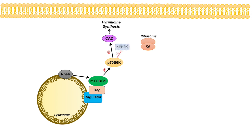Another thing P70S6K does is inhibit EEF2K, or eukaryotic elongation factor 2 kinase. EEF2K normally inhibits EEF2 — eukaryotic elongation factor 2 — through phosphorylation. EEF2 is necessary for elongation of a polypeptide strand within the ribosome. Since P70S6K inhibits EEF2K, EEF2 becomes activated. P70S6K can also activate eukaryotic initiation factor 4B, or EIF4B, which is necessary for polypeptide translation within the ribosome. Additionally, P70S6K can directly phosphorylate the S6 ribosomal subunit and activate the ribosome.